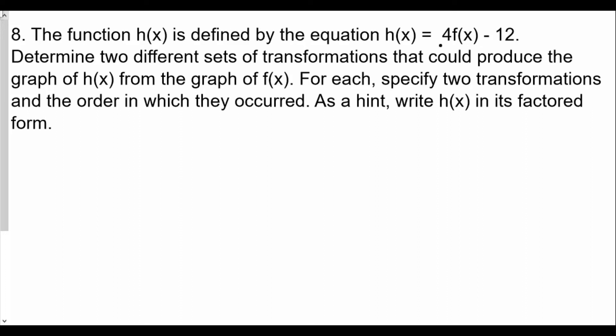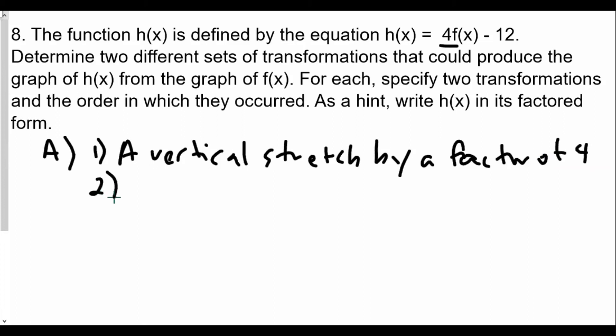So let's take a look at the first one. The first one would be: well it looks like we're multiplying by four, so our first set, I'll call it A, our first set would be one, first a vertical stretch by a factor of four, so we're multiplying by four. And then secondly we're going to shift everything down by 12, so a vertical shift down by 12. So that's the first set of transformations: a vertical stretch and a vertical shift.